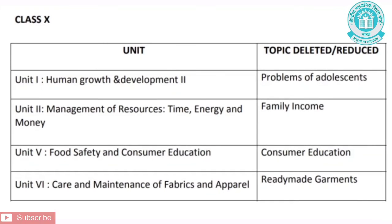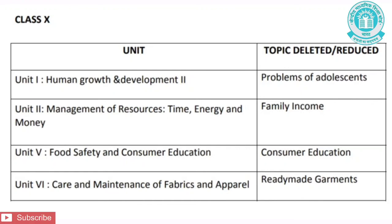The next subject is Home Science for Class 10. Unit 1, Human Growth and Development — the deleted topic is Problems of Adolescence. Unit 2, Management of Resources: Time, Energy and Money — the deleted topic is Family Income. Unit 5, Food Safety and Consumer Education — the deleted topic is Consumer Education. Unit 6, Care and Maintenance of Fabrics and Apparel — the deleted topic is Readymade Garments.